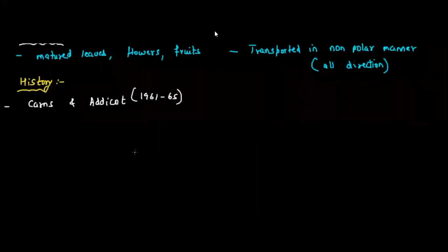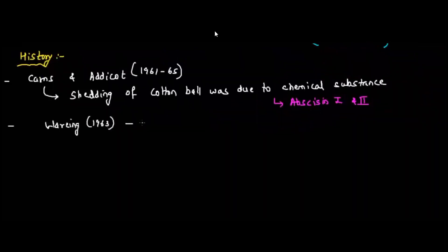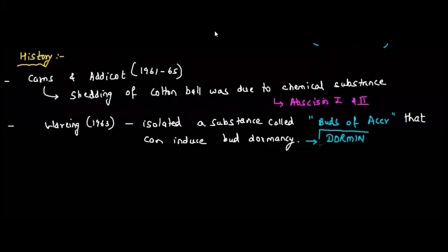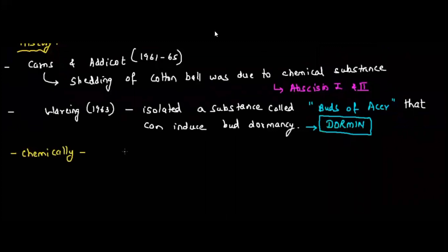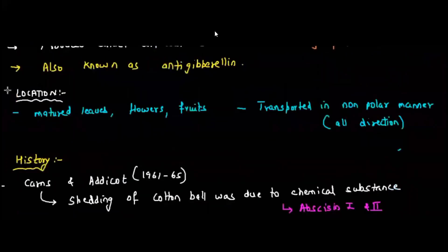Let's look at the history of abscisic acid. Corn and Addicott in 1961 to 1965 studied the shedding of cotton boll and they understood that the shedding of cotton boll was because of a chemical substance called abscissin 1 and abscissin 2. Later on this abscissin 1 and 2 was called abscisic acid. Wareing in 1963 isolated a substance that was called buds of acer and this can induce bud dormancy and this was called dormin. Chemically, abscisic acid is a 15 carbon sesquiterpenoid and it's synthesized from the mevalonic acid.